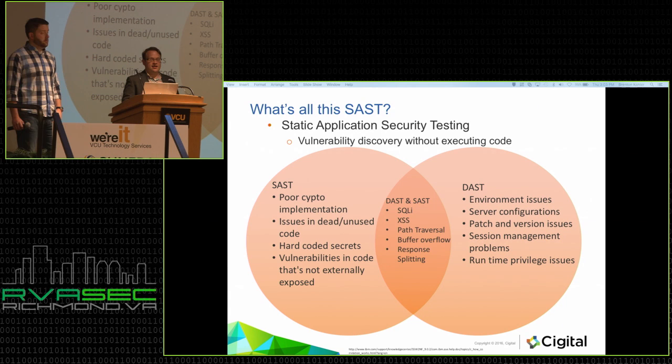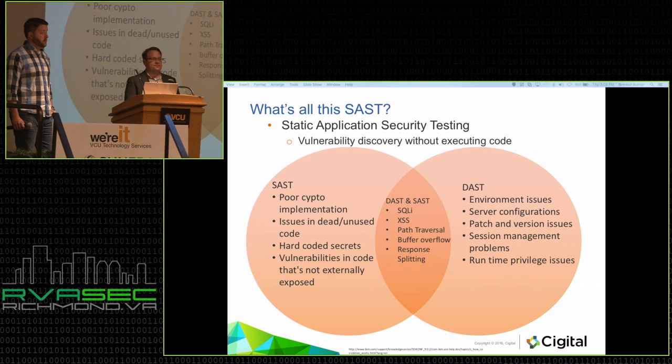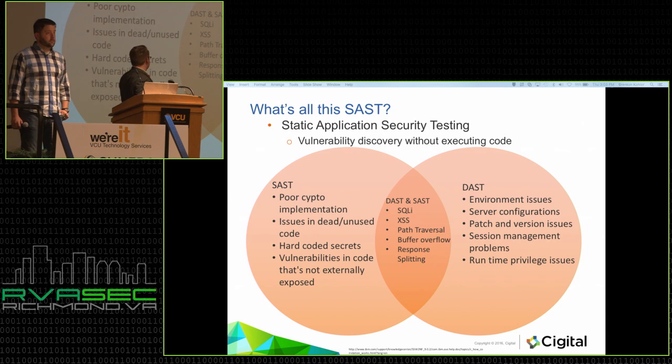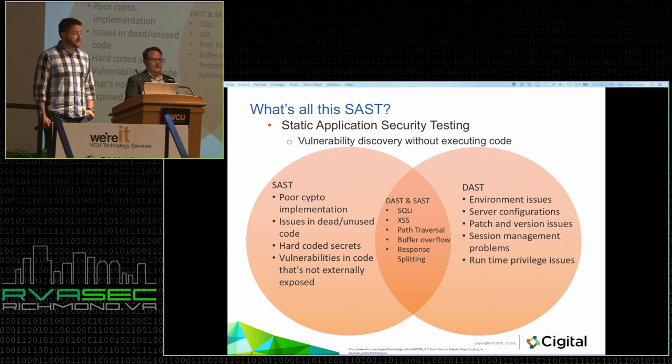Every company for the most part is doing some sort of dynamic analysis — the DAST side of the house. That's your pen test; security has gotten really good at this for a long time. But SAST and DAST are going to find two different things. They can both find your OWASP Top 10 type vulnerabilities — SQL injection, cross-site scripting — both static and dynamic analysis will find those.